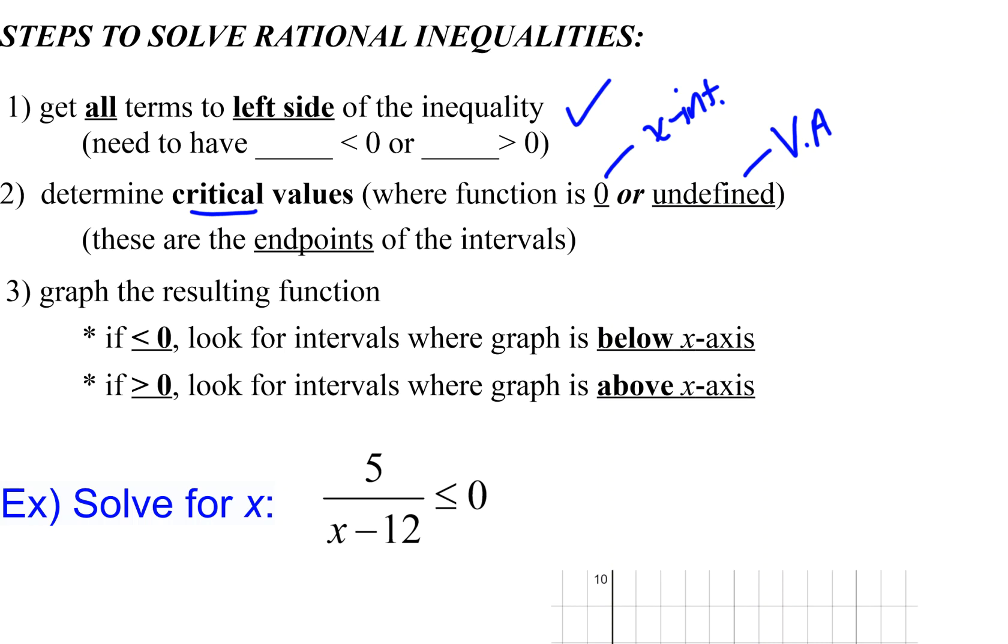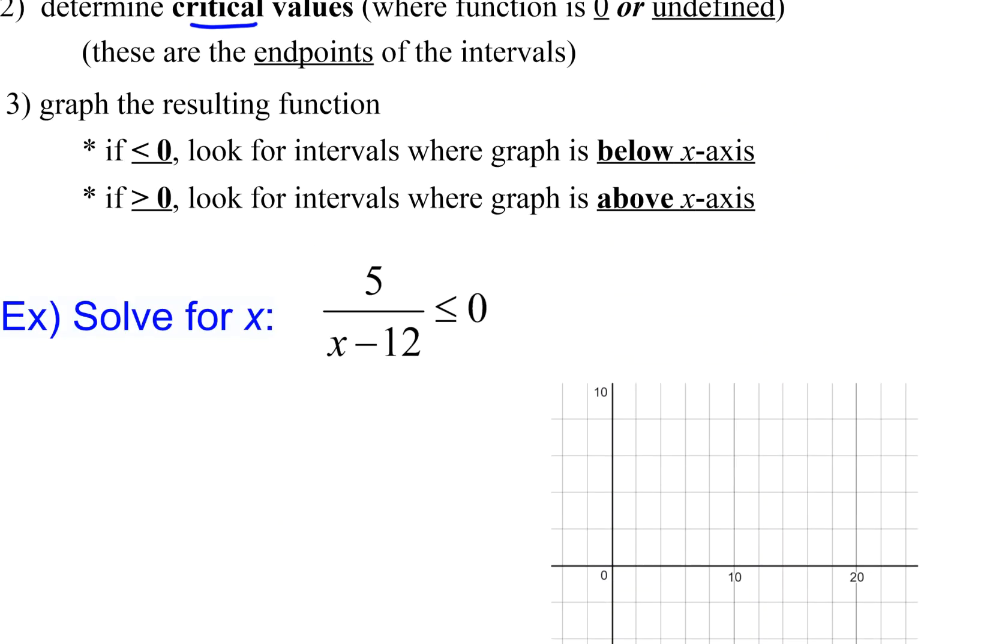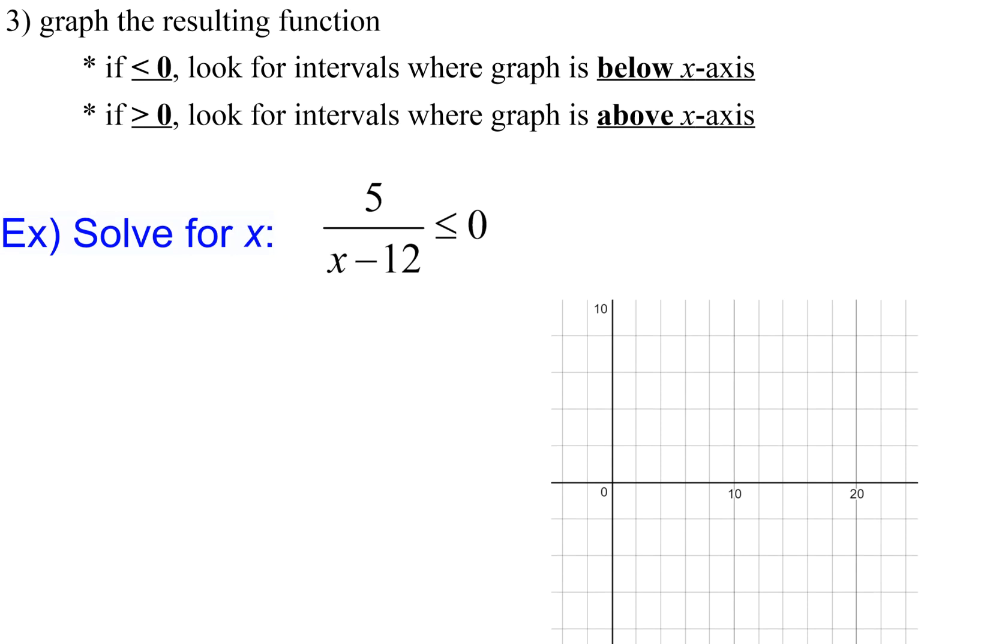Then we graph the resulting function. Just as with polynomials, if it is below the axis, that gives us the areas where we have less than zero. If it's above the axis, those are the places where we have greater than zero.